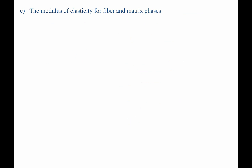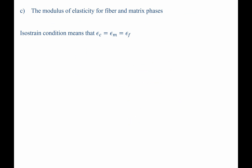Now let's move to part C: the modulus of elasticity for both fiber and matrix phases. To answer this, we recognize that we are under isostrain conditions, meaning the strain is equal throughout the whole material. When you pull on a fiber-reinforced composite, both the fibers and the matrix stretch at the same rate, giving the same strain. This allows us to write that the Young's modulus for the matrix phase equals the stress on the matrix divided by the total composite strain, and the modulus of the fiber phase equals the fiber stress divided by the total composite strain.